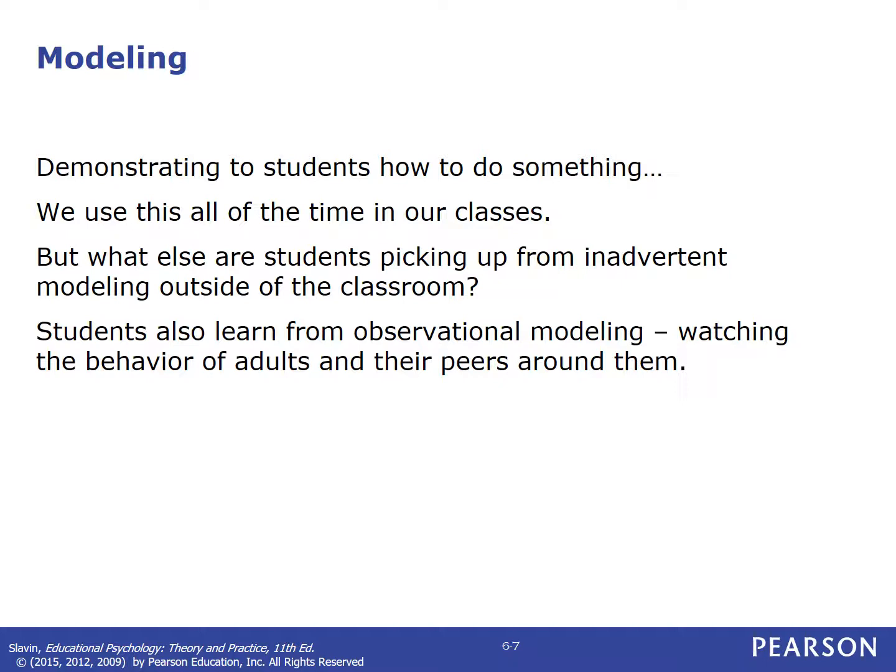It's important to understand what modeling is. Modeling is demonstrating to students how to do something — we do this all the time in classrooms. I might model how to use a microscope, or non-academic things like how to walk in line. Students pick up a lot from teacher modeling, but they also learn from observational modeling — watching the behavior of adults and peers around them. Students learn from their families, friends, peers, you as the teacher, and other adults in their lives, and they try to put it all together and think about whether they should be doing that.